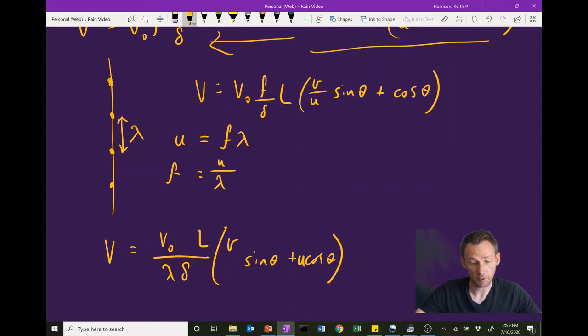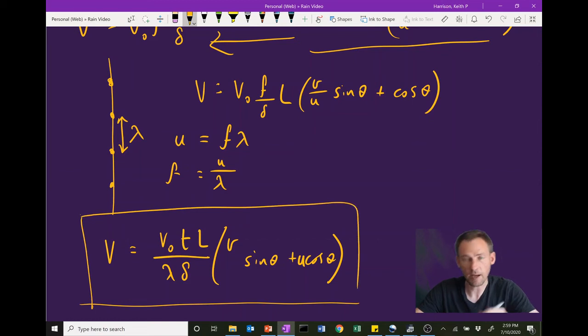And that is our result for one second's worth of being exposed to the rain. If we wanted a longer period of time, we just multiply by that period of time, say t. And so this is actually the answer to our second scenario in which you are out in the rain for a specific period of time, t.